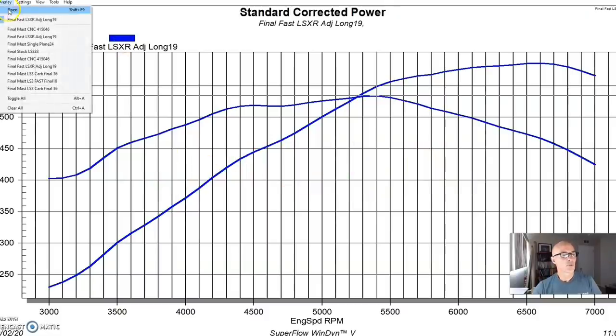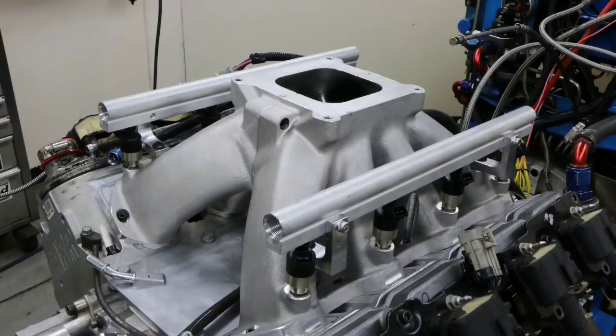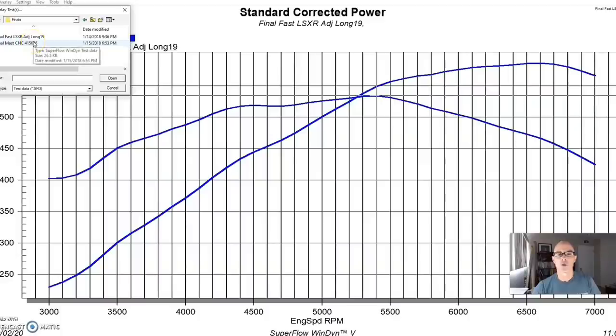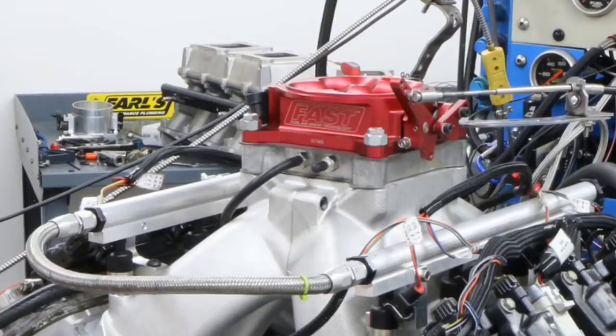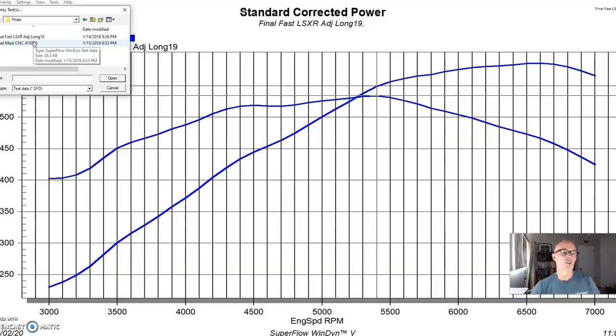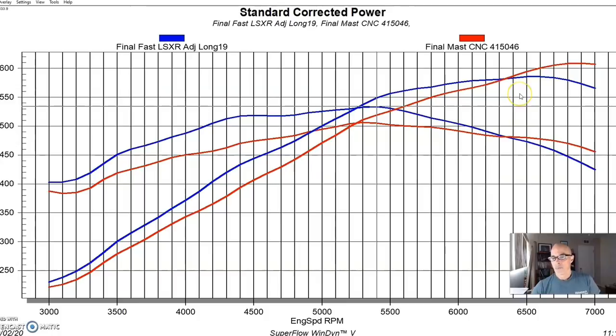Here's what happened when we installed the Mast single-plane intake with a 4150 AccuFab throttle body. We still ran it fuel injected, although you could also obviously run this carbureted combination. Here's what happened when we ran the single-plane intake. And as we've seen on almost every test, when we run a short-runner single-plane intake or a short-runner EFI intake, they always do the same thing.